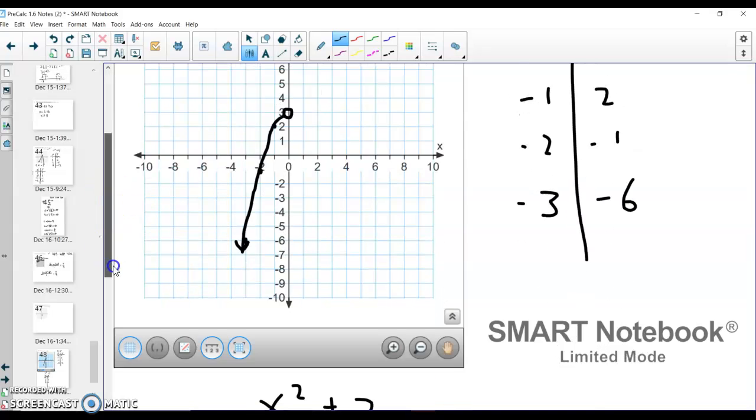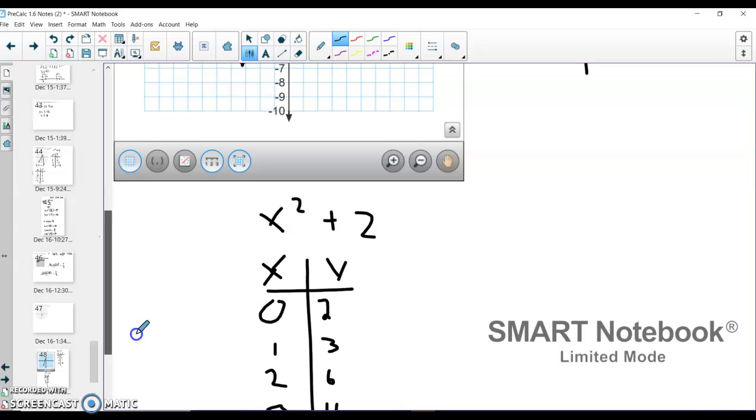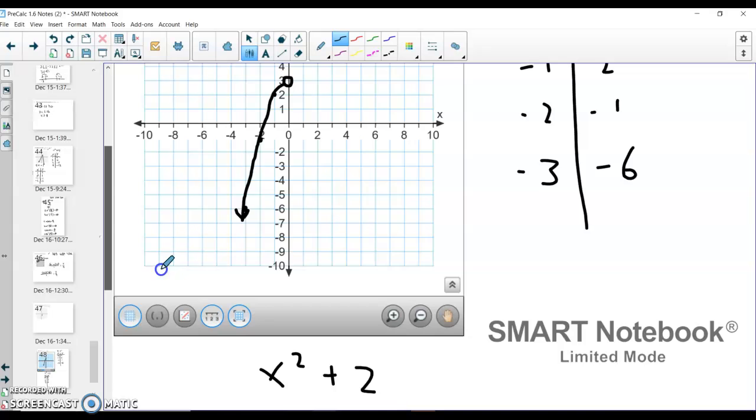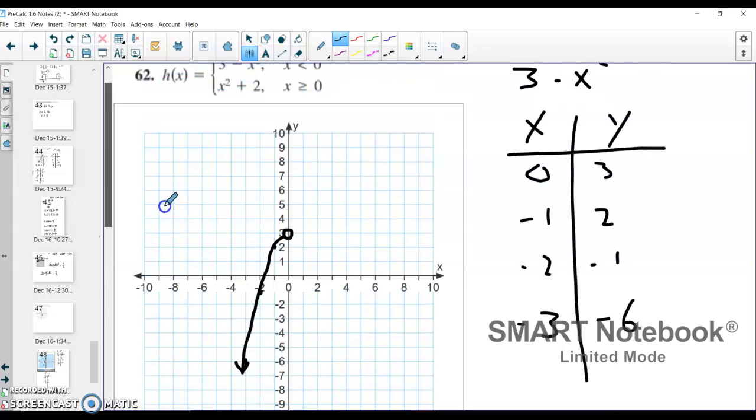Now graphing the other one, starting with 0, 2, this 0 is included because 0 is in our domain here. We have a closed dot at 0, 2. So I go over 0, up 2, and I have my dot there. You can see that these are not intersecting. There is a gap. That one's at 0, 3. This one's at 0, 2.